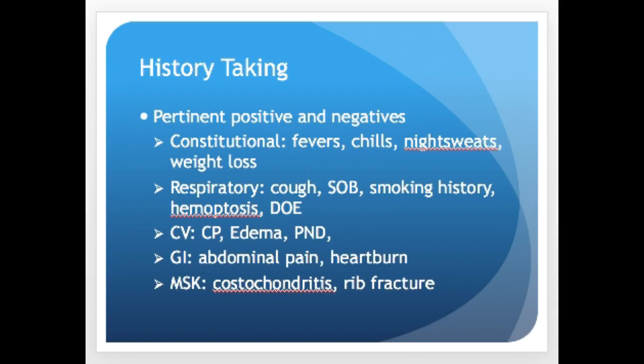Pertinent positives and negatives for lung and thorax conditions: constitutional — fever, chills, night sweats, weight loss. Respiratory — cough, shortness of breath, smoking history, hemoptysis, dyspnea on exertion. Cardiovascular — chest pain, edema, paroxysmal nocturnal dyspnea. GI — abdominal pain or heartburn, which could point toward GERD. Musculoskeletal — costochondritis and rib fractures are two common causes of chest pain in younger people without typical cardiac patterns.